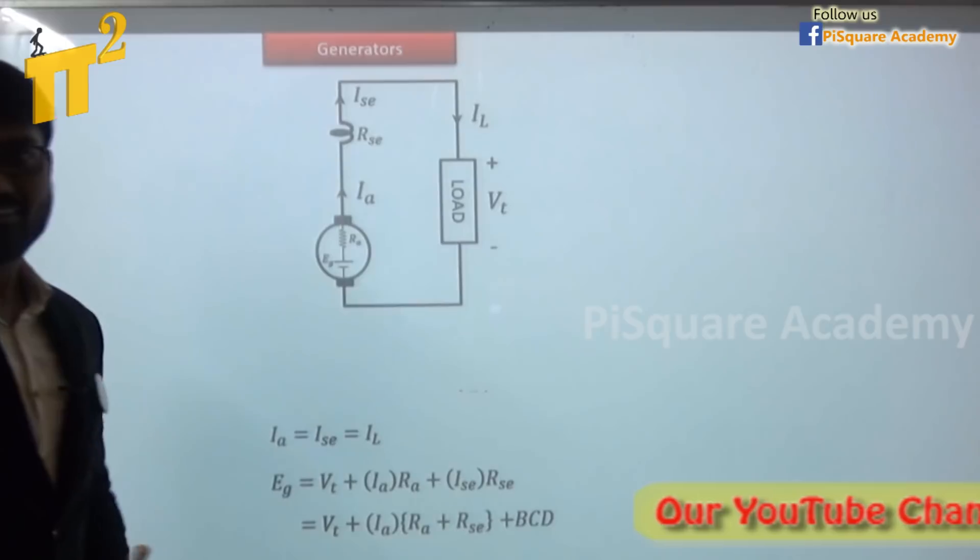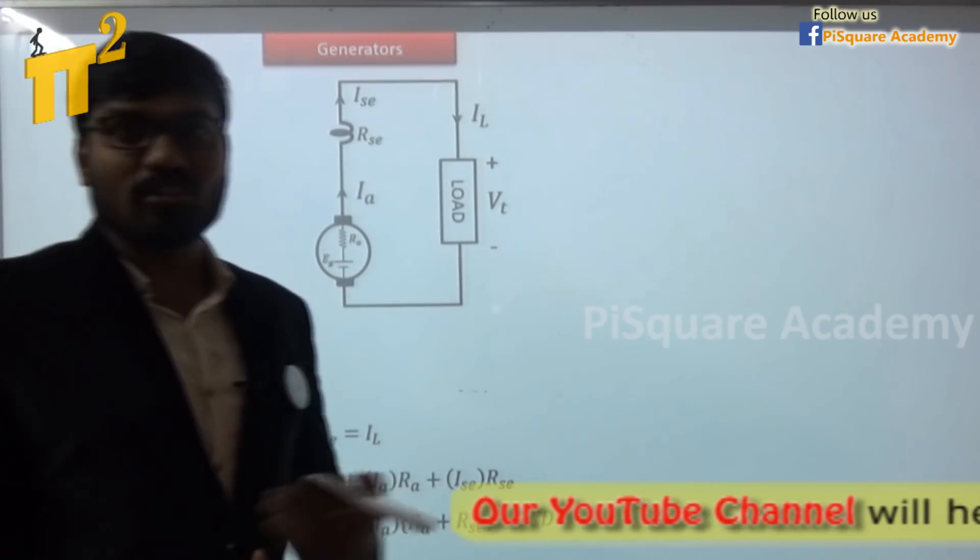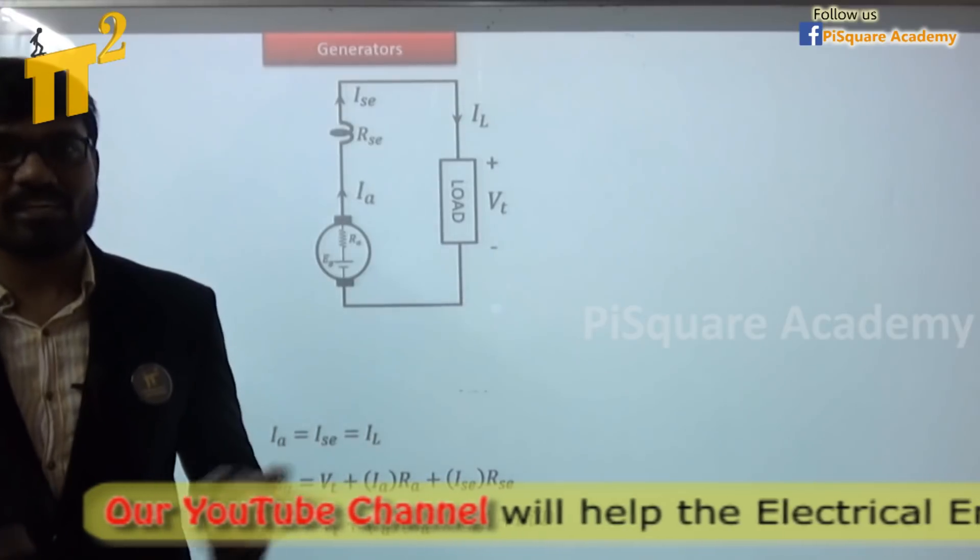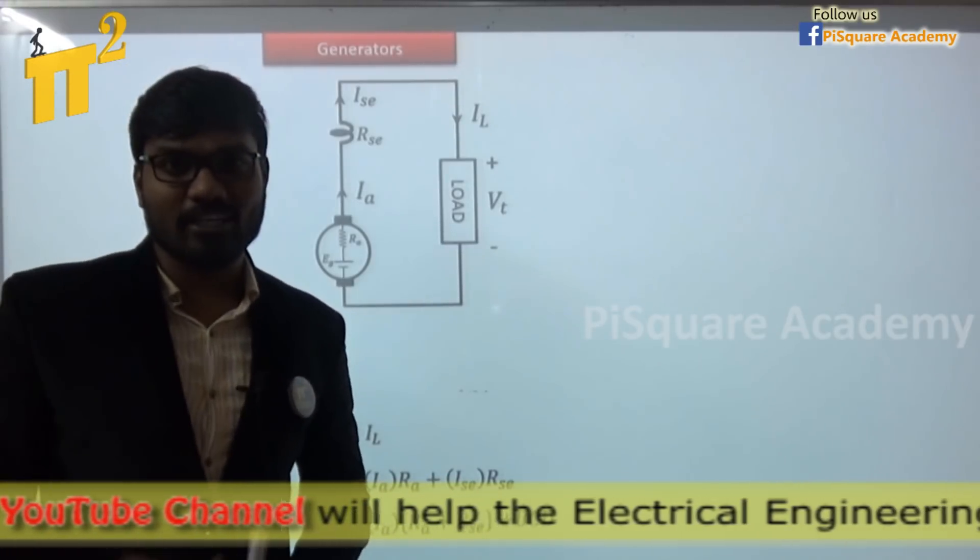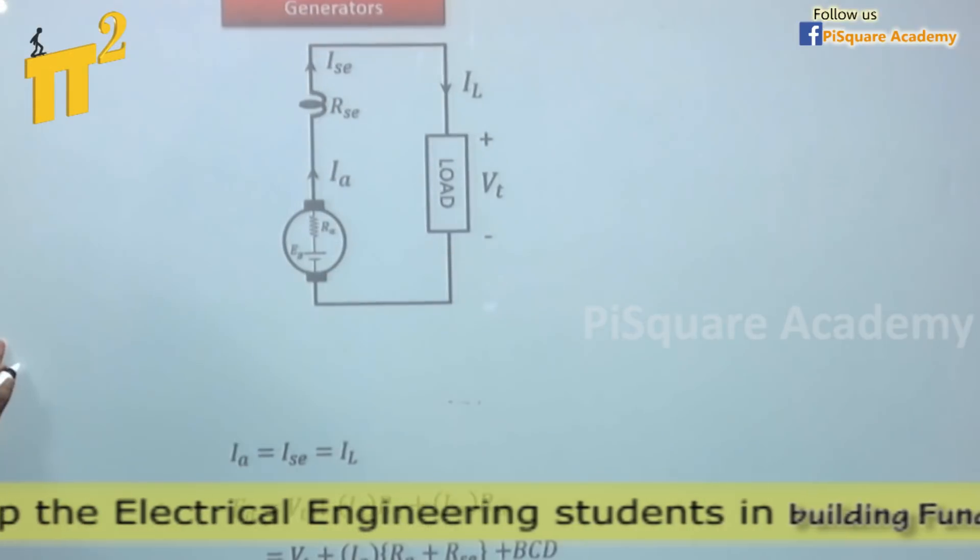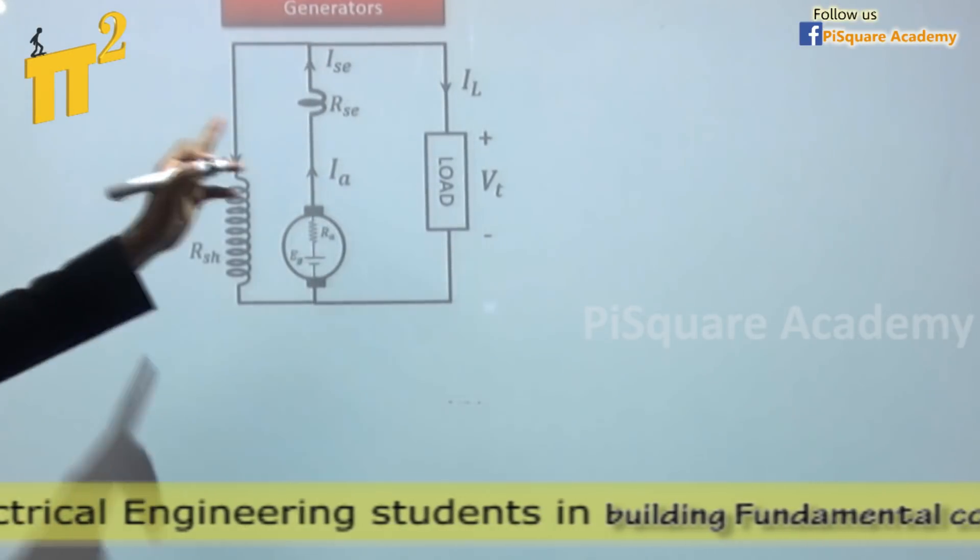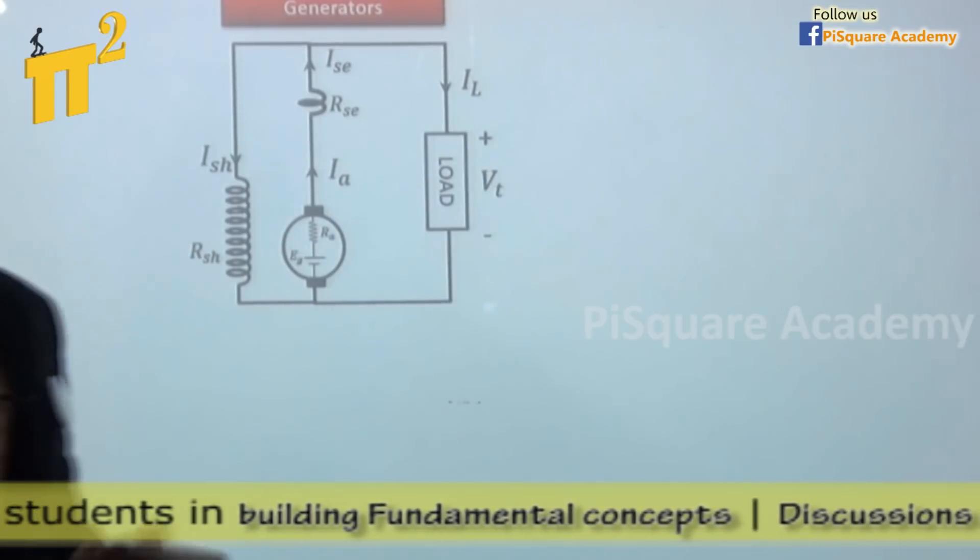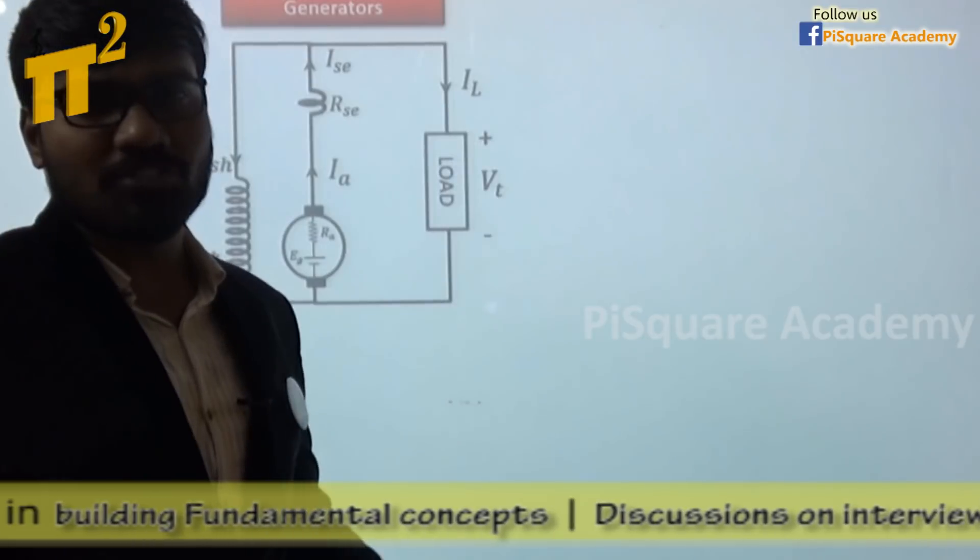People were not happy yet. Why can't we use both the field windings, which will give more magnetic flux and hence more generator voltage. There comes the idea of combining or compounding both shunt field and series field winding. And hence, name of this connection is called compound field DC generator or simply DC compound generator.